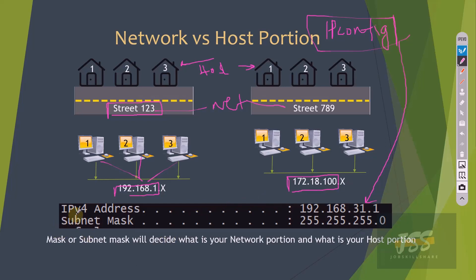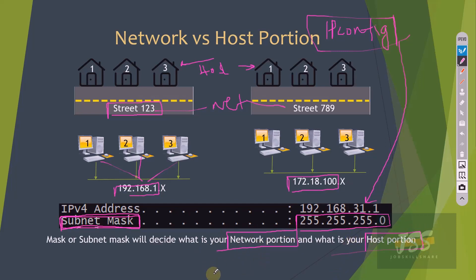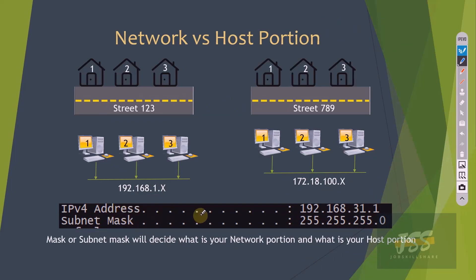Just beneath the IPv4 address, there is something called a subnet mask. Many people get confused — what is a subnet mask and why do we need it? Whenever you see an IPv4 address, you will always see a subnet mask alongside it. The subnet mask decides what is your network portion and what is your host portion. It is the recipe, or solution, to find out your network portion and your host portion. For example, take the IPv4 address 192.168.31.1.